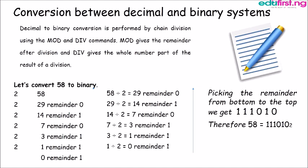Now picking the remainder from bottom to top we get 111010. Therefore 58 converted to its binary equivalent is 111010 base 2. Don't forget to add the base there.